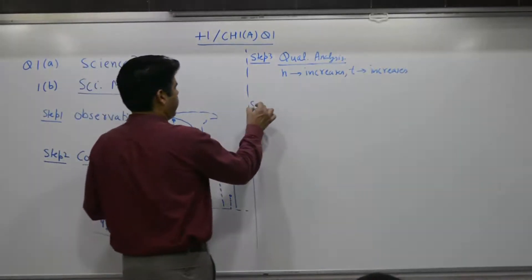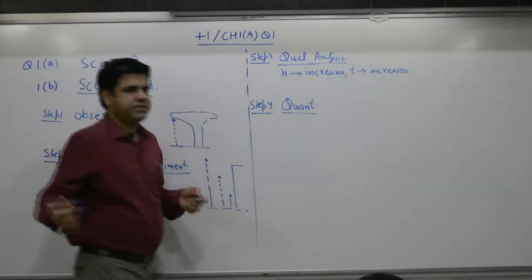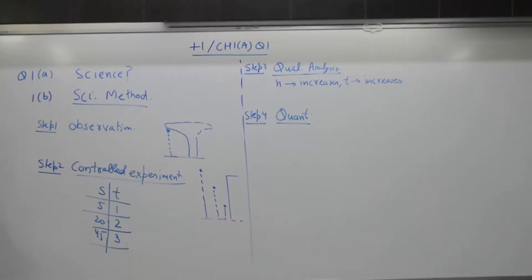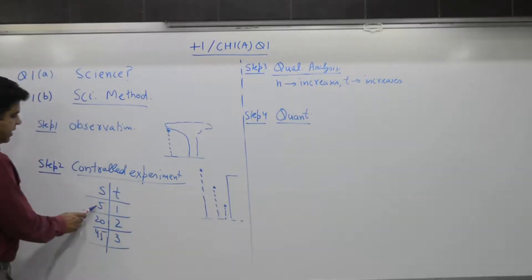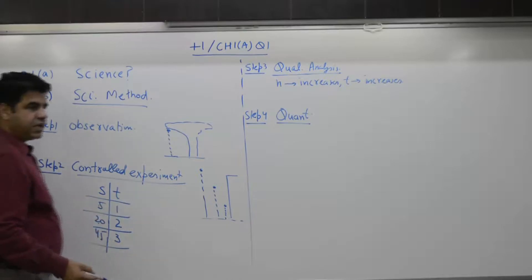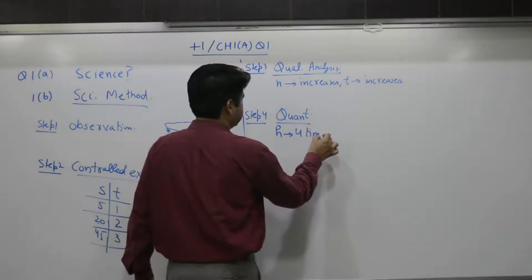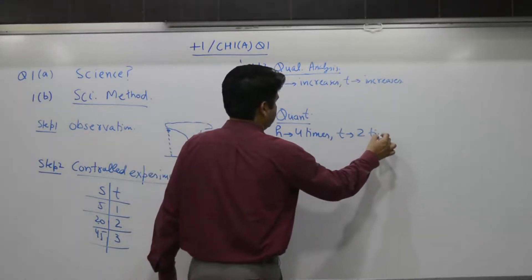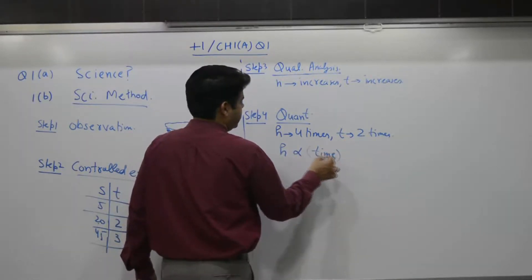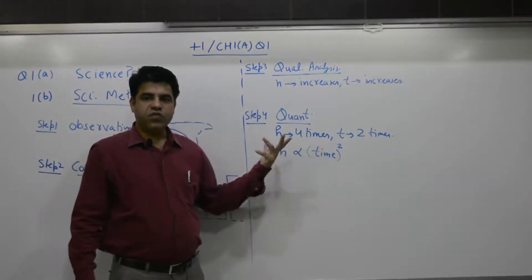Step four: quantitative analysis. In quantitative analysis, if H becomes four times, T becomes two times. Check it: H goes from five to twenty — that is four times. T goes from one to two — that is two times. So if H is four times, T is two times. He concluded: H is proportional to the square of T. Time is two times, two squared is four — height is four times. And you can write: S equals one-half times g times T squared.